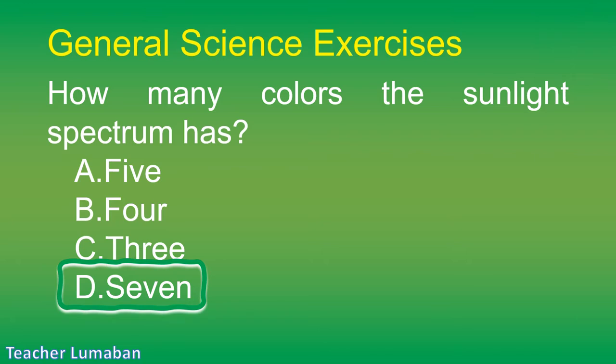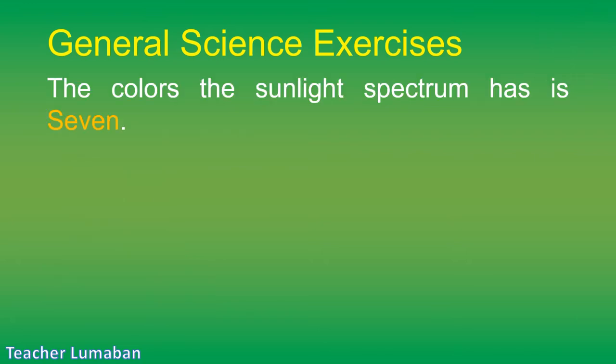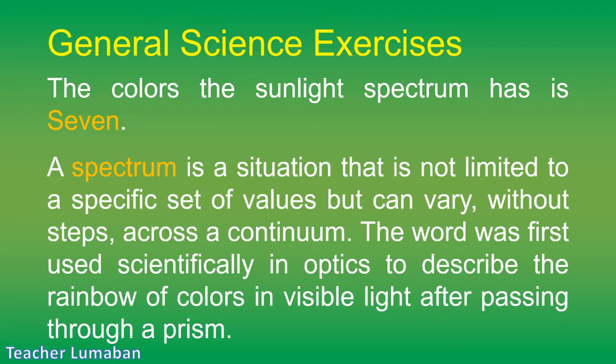The correct answer is Letter D: 7. The sunlight spectrum has 7 colors. A spectrum is a situation that is not limited to a specific set of values but can vary, without steps, across a continuum. The word was first used scientifically in optics to describe the rainbow of colors in visible light after passing through a prism.